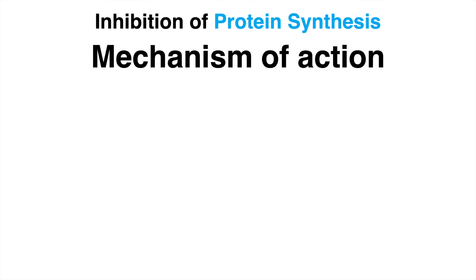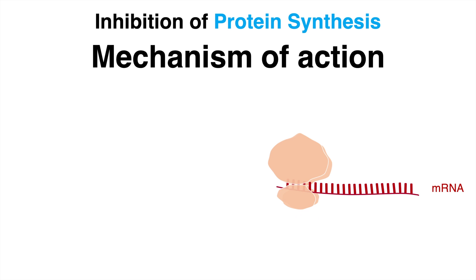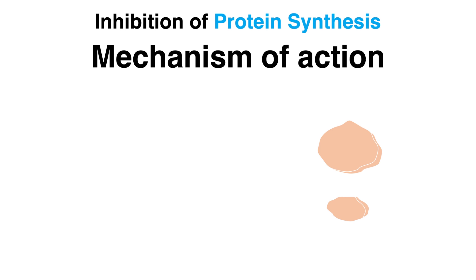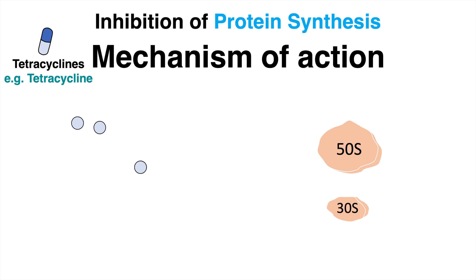Other antibiotics can inhibit protein synthesis. The bacterial mRNA needs to be translated into protein. Ribosomes are the responsible catalytic machinery of translation. They synthesize a polypeptide chain, which will fold into protein. The bacterial ribosome consists of two subunits: the larger 50S and the small 30S subunit. Tetracycline is an antibiotic that interferes with the small 30S subunit. tRNAs can no longer bind to the ribosome and protein synthesis is inhibited. This does not directly kill the bacterium; however, it depletes them of protein required for growth. This mechanism is therefore considered bacteriostatic.